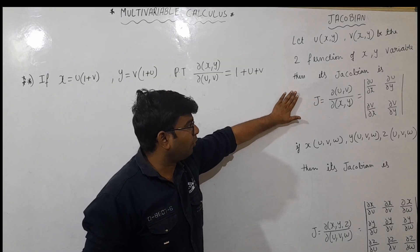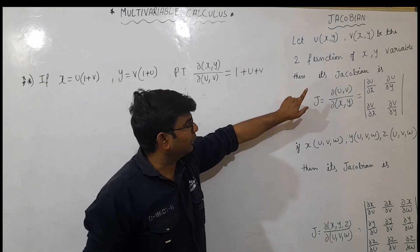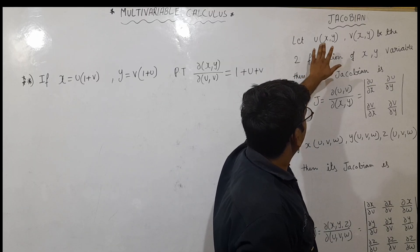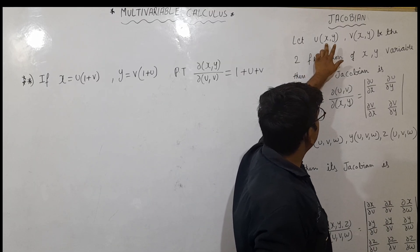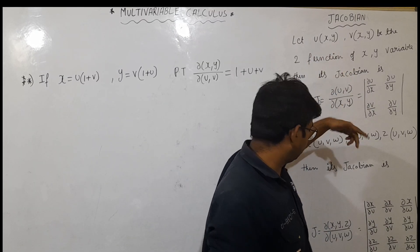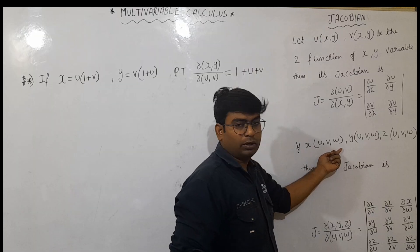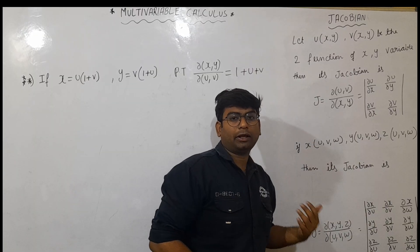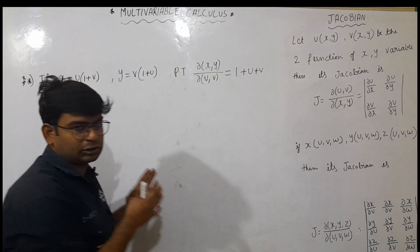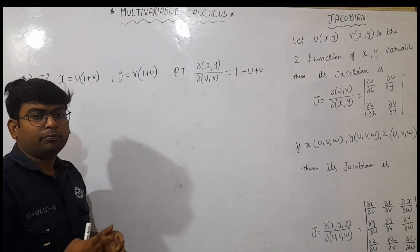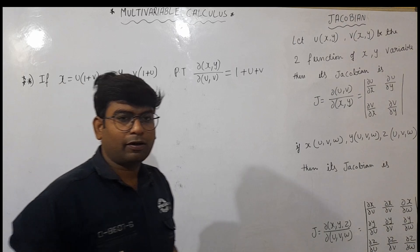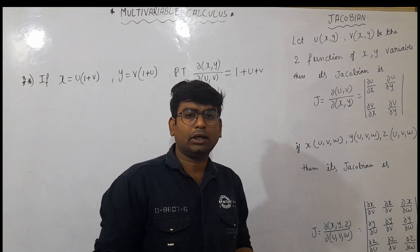Now we are going to learn about the Jacobian. So this formula — we have two functions u and v of x and y, or let's say three functions u, v, w. We need to understand this step by step. Examples, methods, and basics are needed.